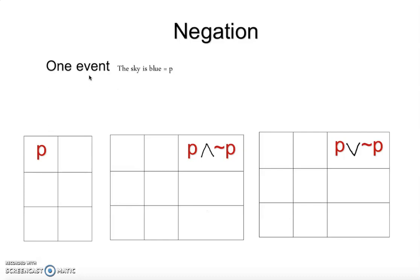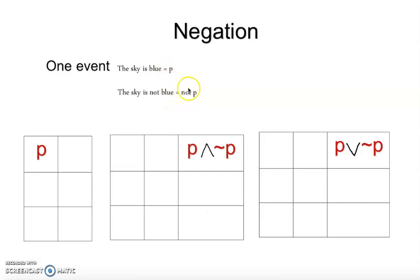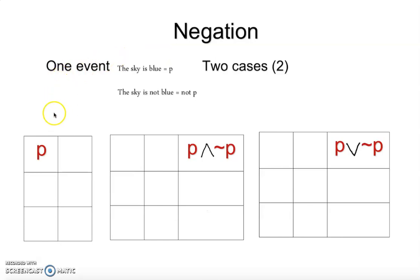One statement is basically 'the sky is blue.' If I say the sky is blue, that's one statement, and I can represent it as P. Or I can say 'the sky is not blue,' which means it's not P — that's the negation. One statement always has two cases, as you can clearly see.